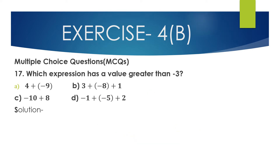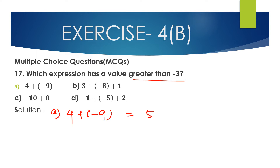Question 17, MCQ: Which expression has a value greater than minus 3? First, option A: 4 plus minus 9. When we add two integers with different signs, we subtract the smaller from the bigger — that is 9 minus 4 equals 5 — and place the sign of the bigger integer. 9 is negative, so the answer is minus 5.